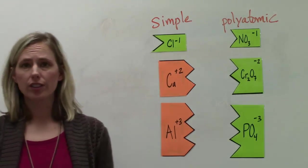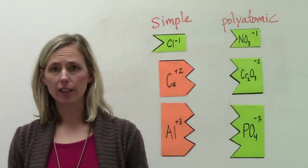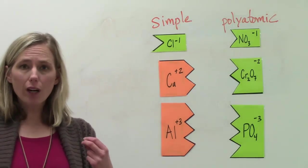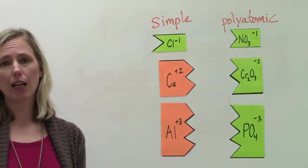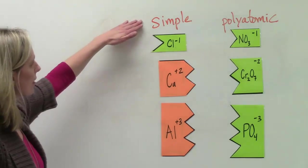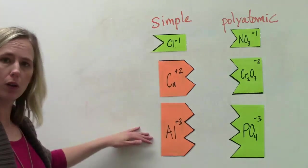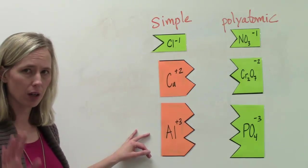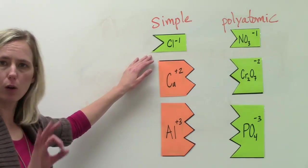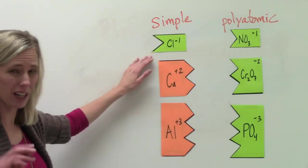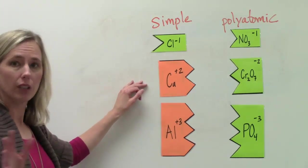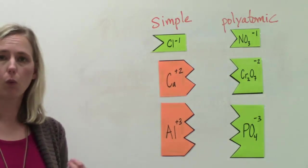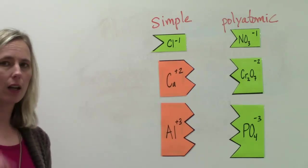The next part of our lesson focuses on polyatomic ions. I put a couple of ions on the board to show you the difference between a simple ion and a polyatomic ion. In the simple ion category, notice that every ion is composed of one atom only. We've got chloride — just Cl, one element. Calcium in this one, aluminum in this one. Every single time, one element, one atom is involved.